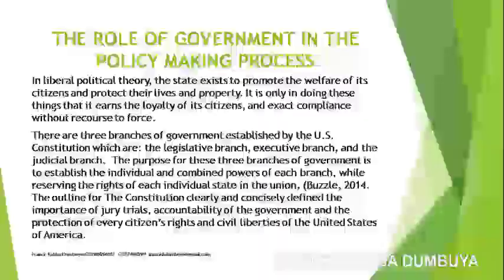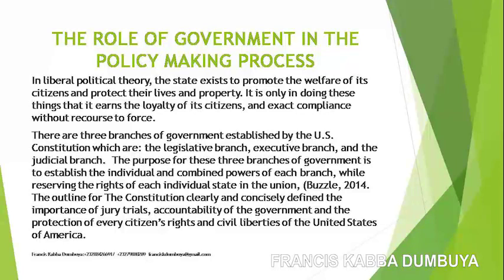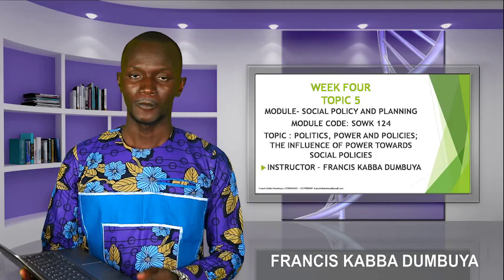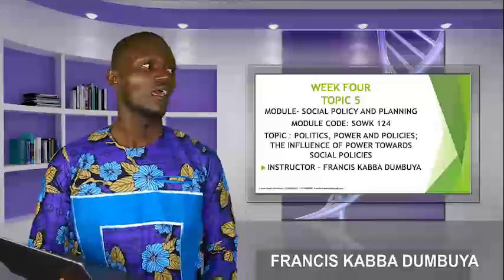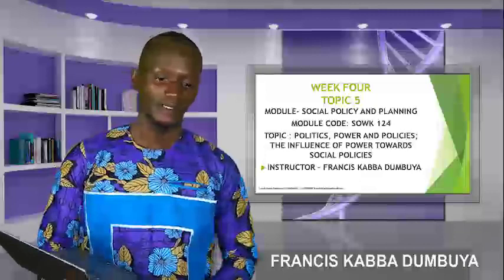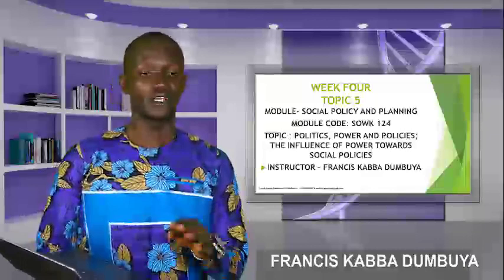Now let's move to the role of government in the policy-making process. The role of government cannot be overemphasized, and this is really where the influence of government towards policy formulation lies. Government consists of three organs: the legislature, the executive, and the judiciary. These three organs are so powerful that they have the utmost tendency to influence decisions. No policy can pass without the interventions of these three.